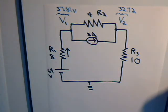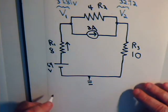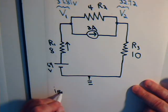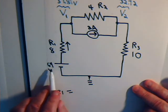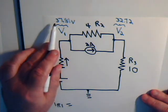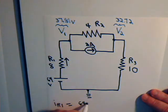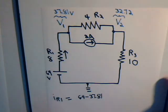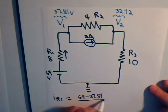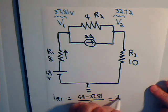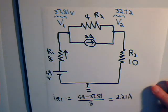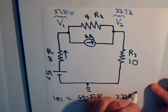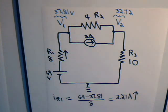So the current goes upward through resistor R1 into node 1. That current would be equal to 64 volts minus 37.81 volts, that's the net voltage drop, divided by the resistance of 8 ohms. That comes out to approximately 3.27 amps flowing upward.